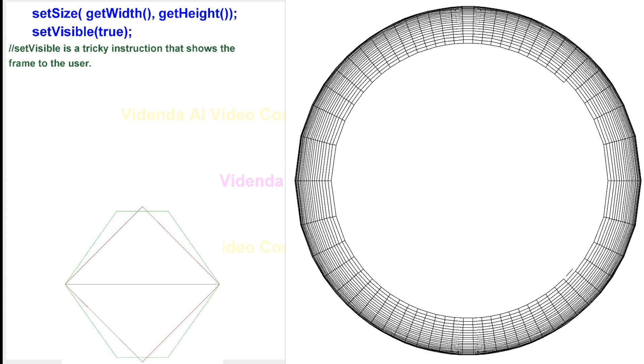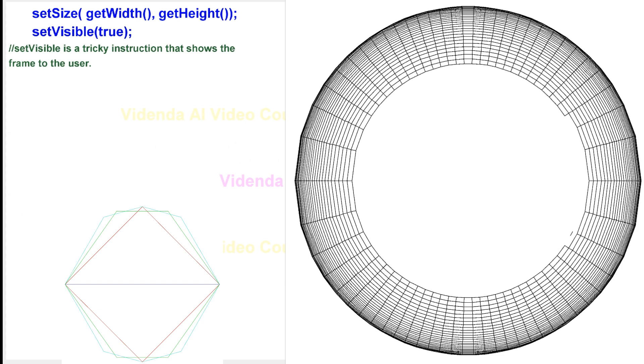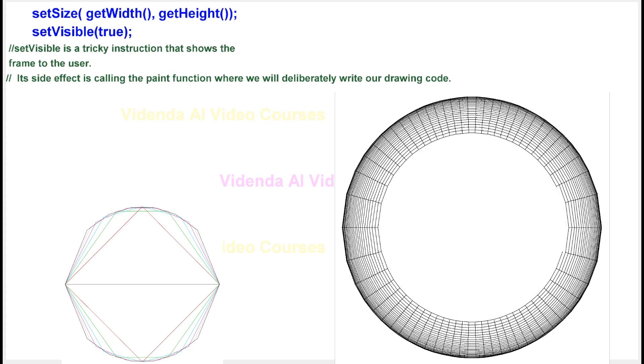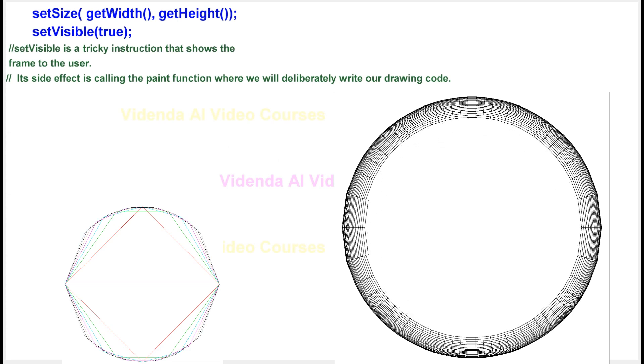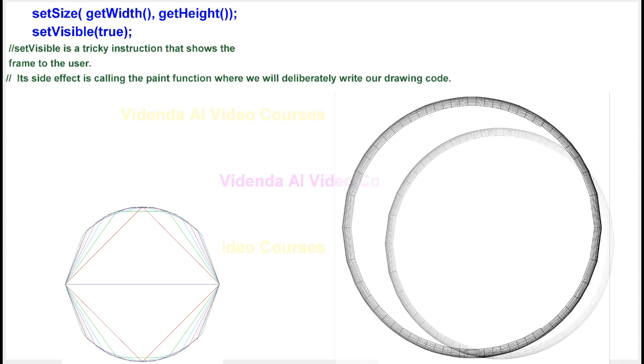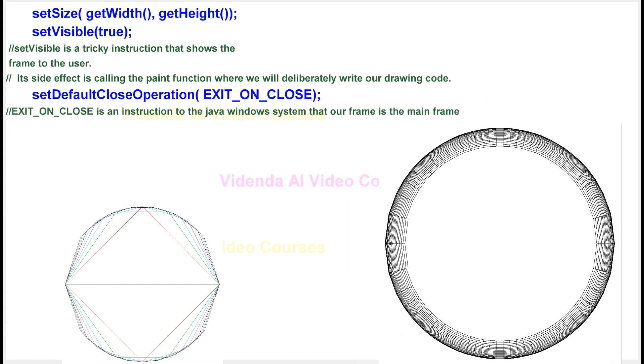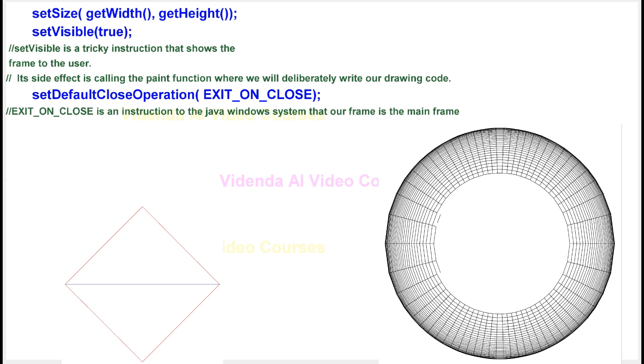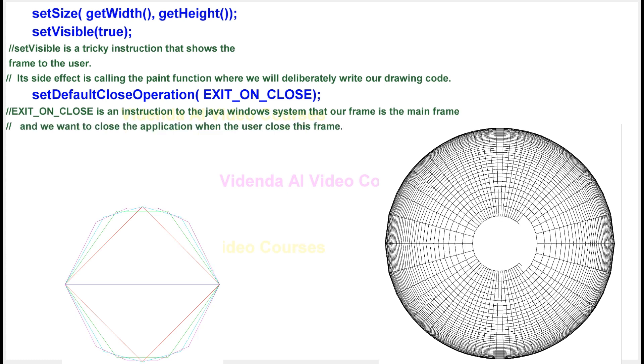Set visible is a tricky instruction that shows the frame to the user. Its side effect is calling the paint function where we will deliberately write our drawing code. EXIT_ON_CLOSE is an instruction to the Java Windows system that our frame is the main frame, and we want to close the application when the user closed this frame.